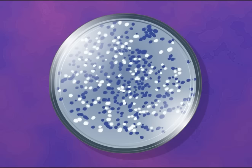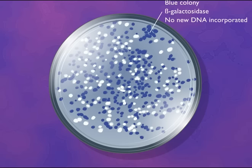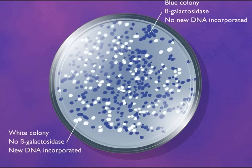Therefore, colonies of cells that harbor the intact vector but no new recombinant DNA can make beta-galactosidase and form a blue color in the presence of X-gal. However, colonies that contain new recombinant DNA cannot make beta-galactosidase and are white.